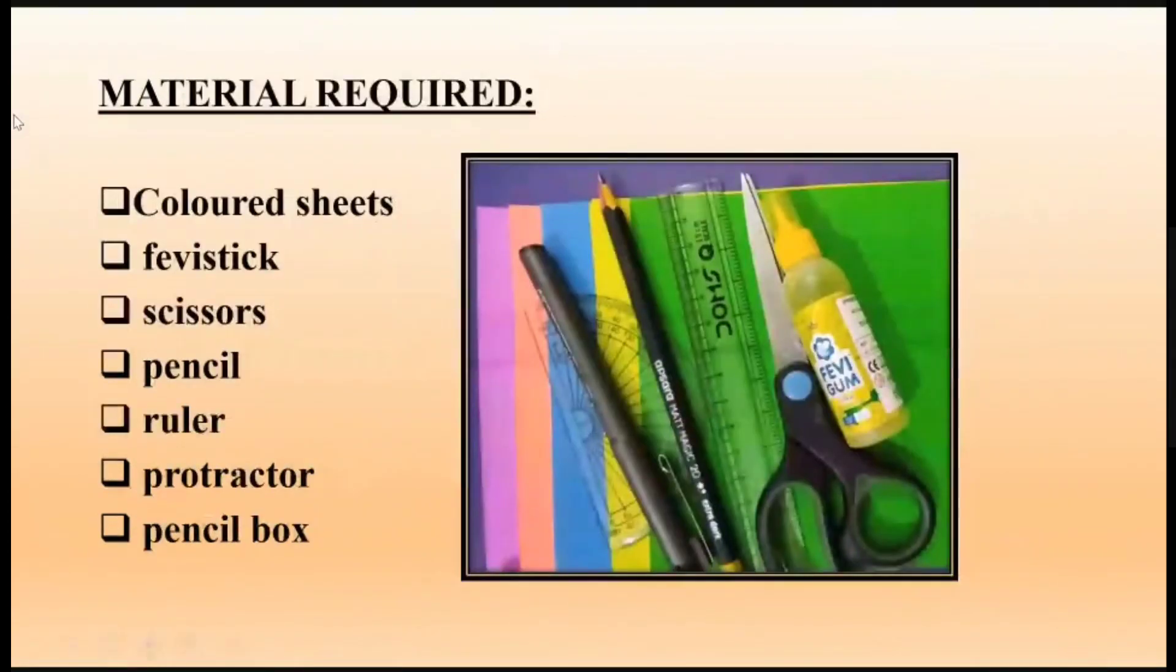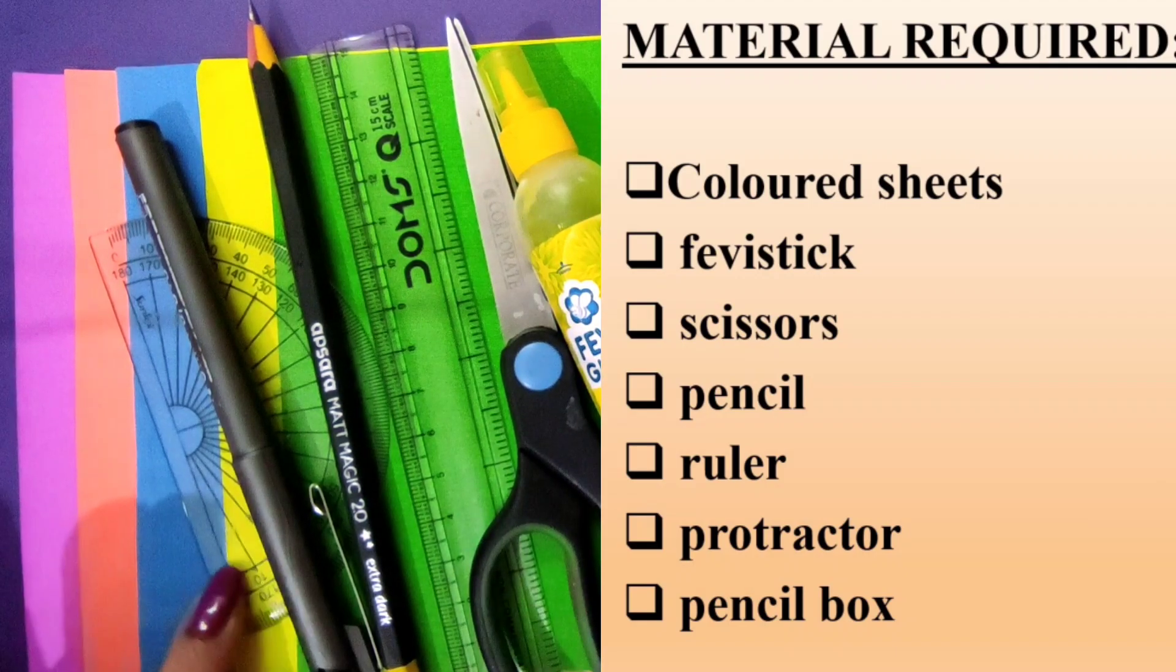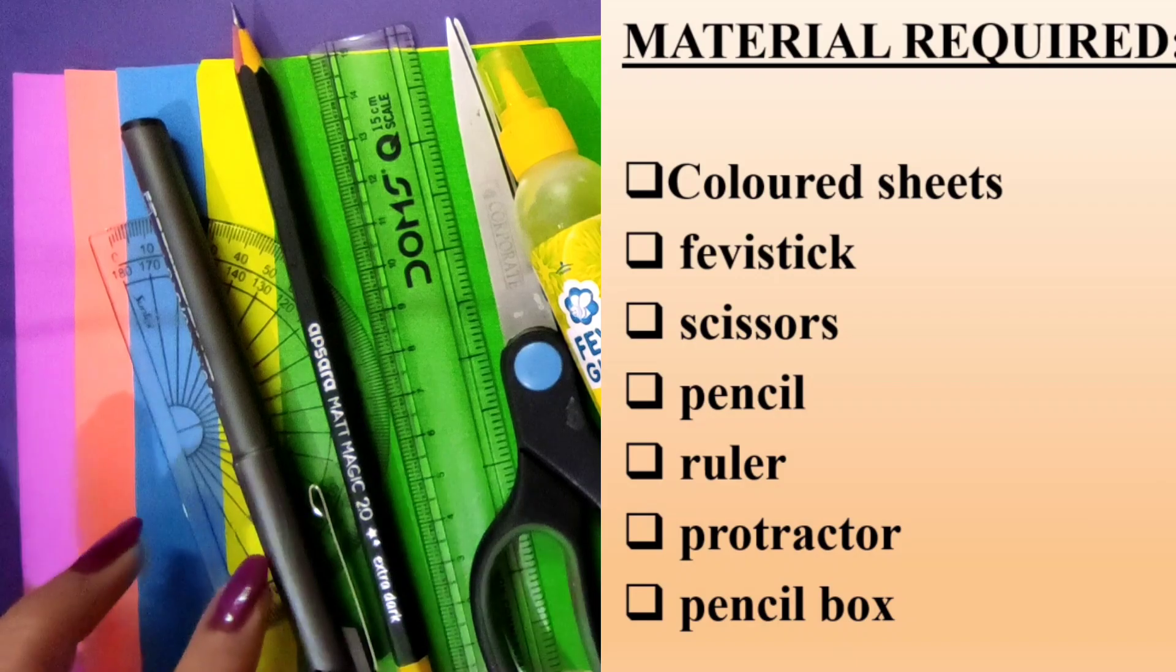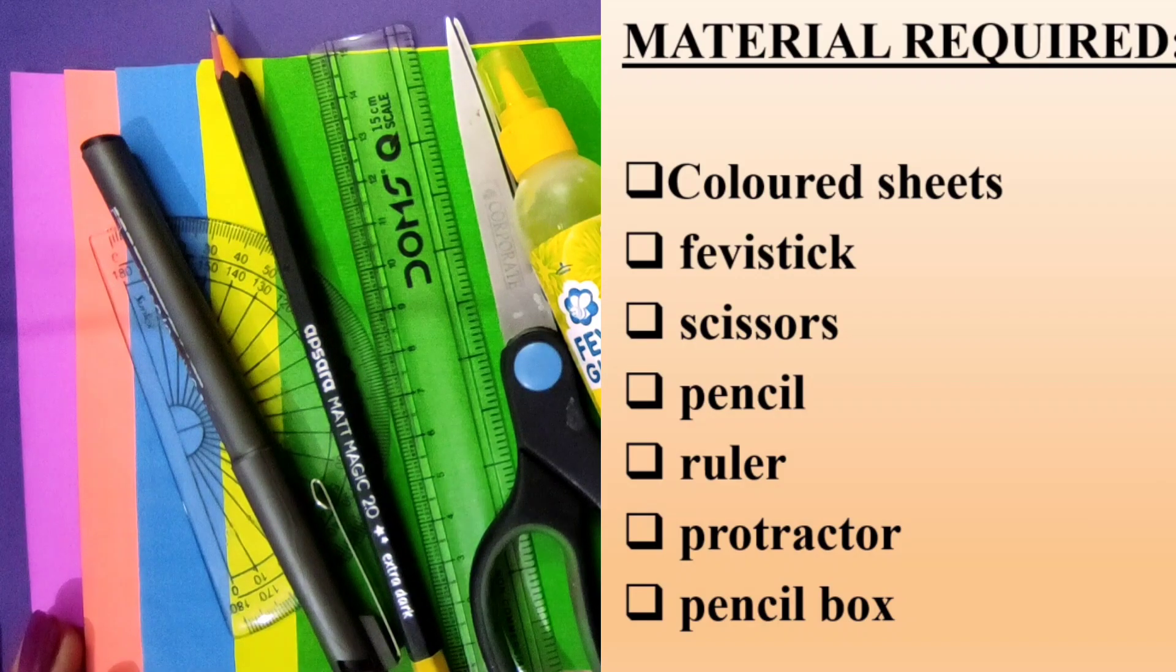The material required is origami sheet, fevy stick, ruler, protractor, pencil, scissors, and pen. Let me demonstrate how we are going to do the activity.